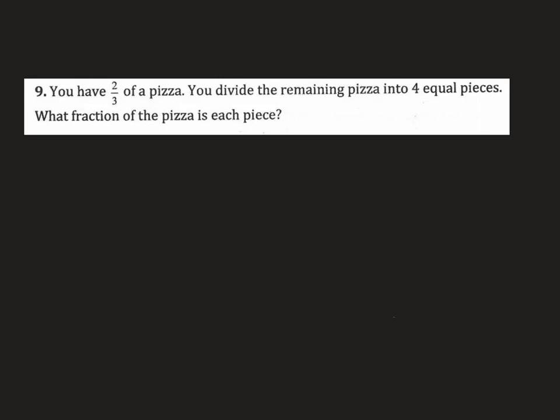Alright, so if you look, some key words here. Two-thirds of a pizza, right? And then you also have the word here — you divide the remaining pizza into four equal pieces. So make sure you take a look at your key words there so you can decide what to do here.